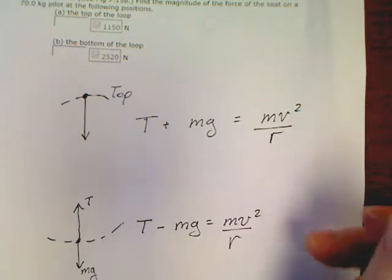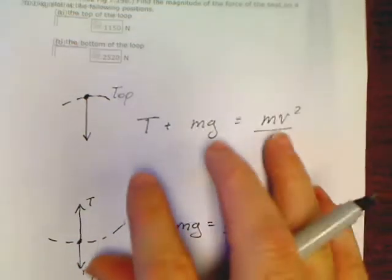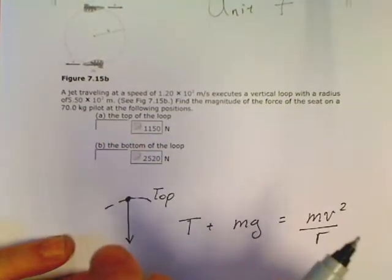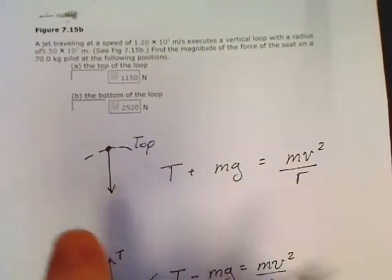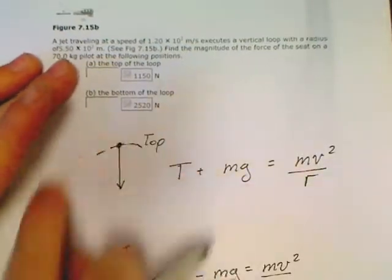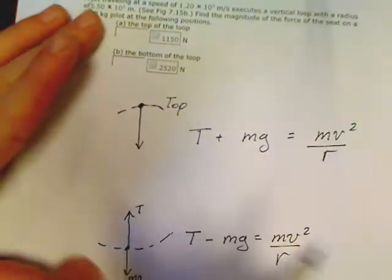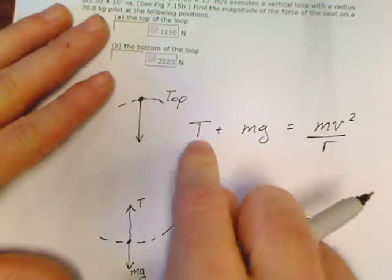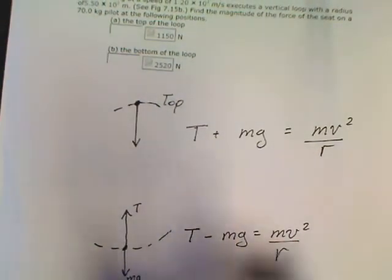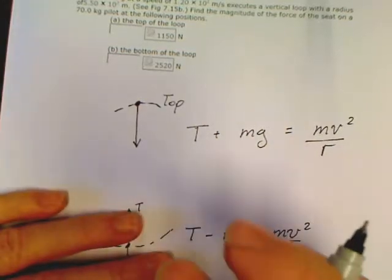That's pretty much everything we needed. The question says find the force of the seat on the pilot. Well, that's tension. If this pilot was attached by a giant rope getting slung in a circle, it would be the same problem. So the force of the seat is my tension. I'm just too lazy to rewrite the letter T, but that's what I'm looking for.